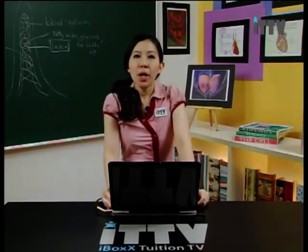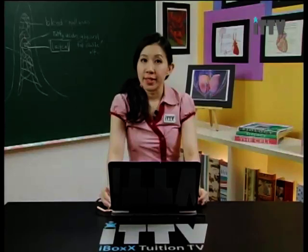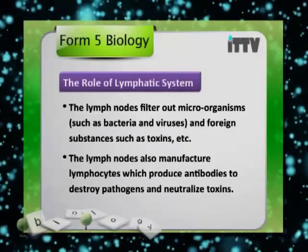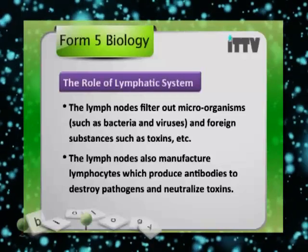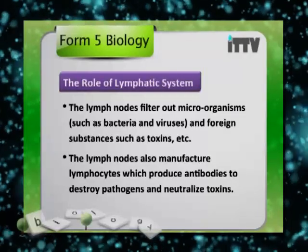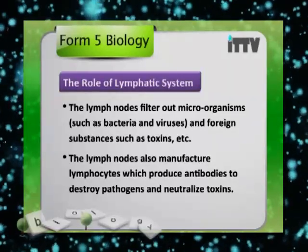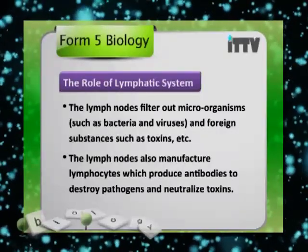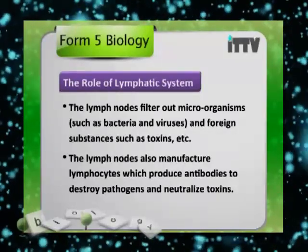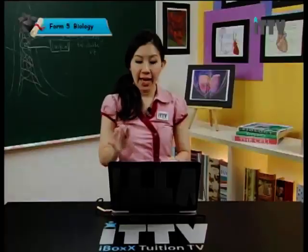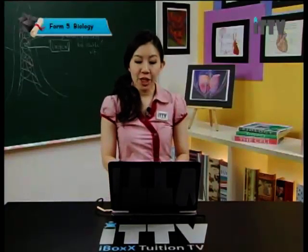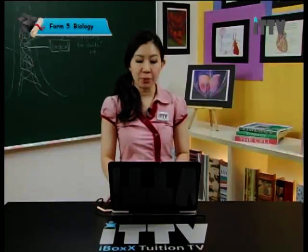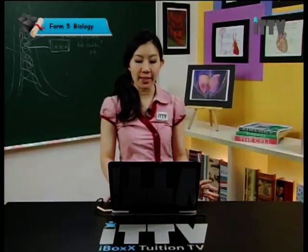What about the role of the lymph nodes? The lymph nodes filter out microorganisms such as bacteria and viruses and foreign substances such as toxins. The lymph nodes also manufacture lymphocytes which produce antibodies to destroy pathogens and neutralize toxins. With that, we have finished the theory part of the lymphatic system, its roles and importance.